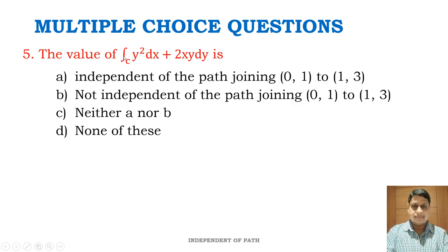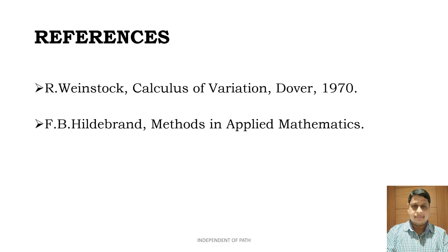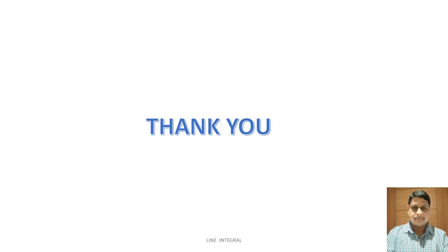MCQ 5: the value of ∫_C y² dx + 2xy dy — is it (a) independent of the path joining (0,1) to (1,3), (b) not independent, (c) neither a nor b, or (d) none of these? After simplification the key answer is option A: independent of the path joining (0,1) to (1,3). These are the two references used. Thank you all.